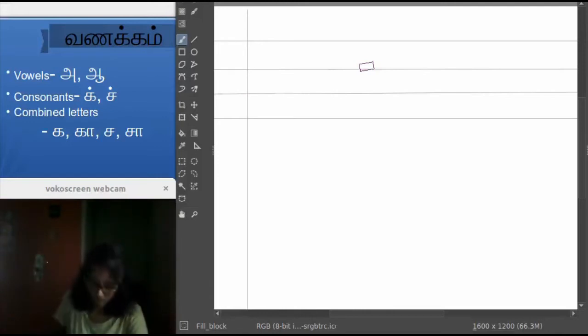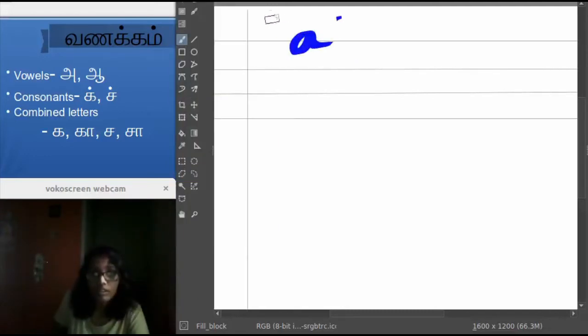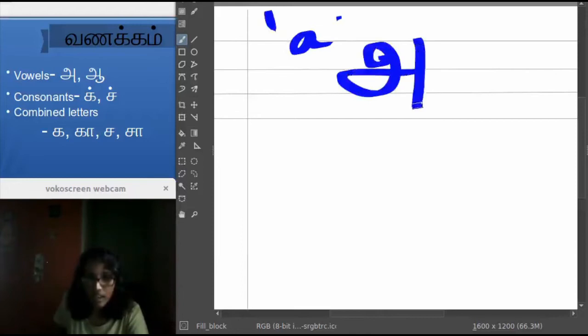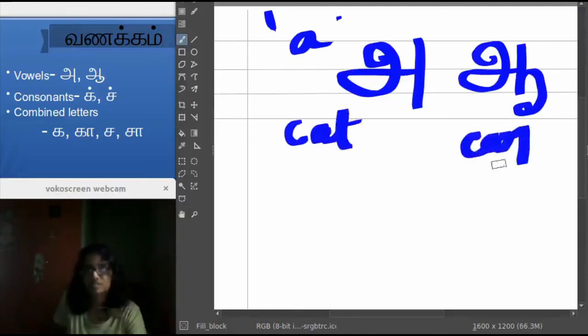This is how the first sound is, the A sound. And this is how we write A. This is a short noted A and this is a long noted Ā. A as in cat and cot. Cat and you can also say car.